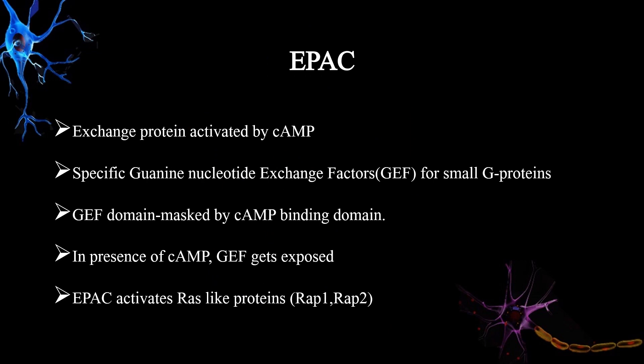The second effector protein of cAMP is EPAC — exchange protein activated by cAMP. These are specific guanine nucleotide exchange factors for small G proteins. There is a GEF domain and a cAMP binding domain. Usually the GEF domain is masked by the N-terminal region containing the cAMP binding domain. When cAMP binds, the domain dissociates and exposes the GEF, allowing EPAC to activate small Ras-like proteins. The two EPAC isoforms, EPAC1 and EPAC2, act as GEFs for the Ras-like GTPases RAP1 and RAP2 respectively.